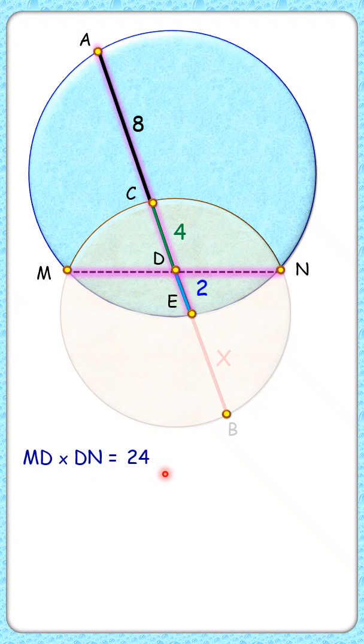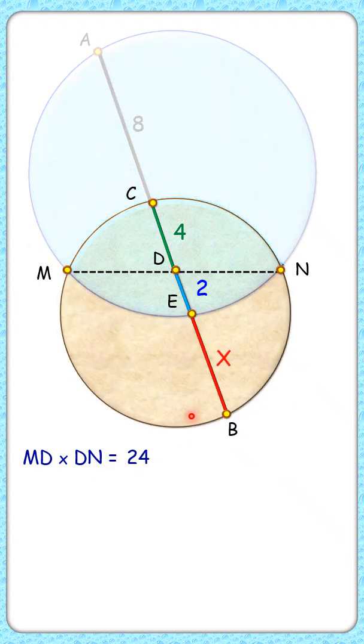Same way, in this brown circle we have chord MN and CB intersecting at point D. Applying the power of point theorem, we get MD times DN equals CD times DB.